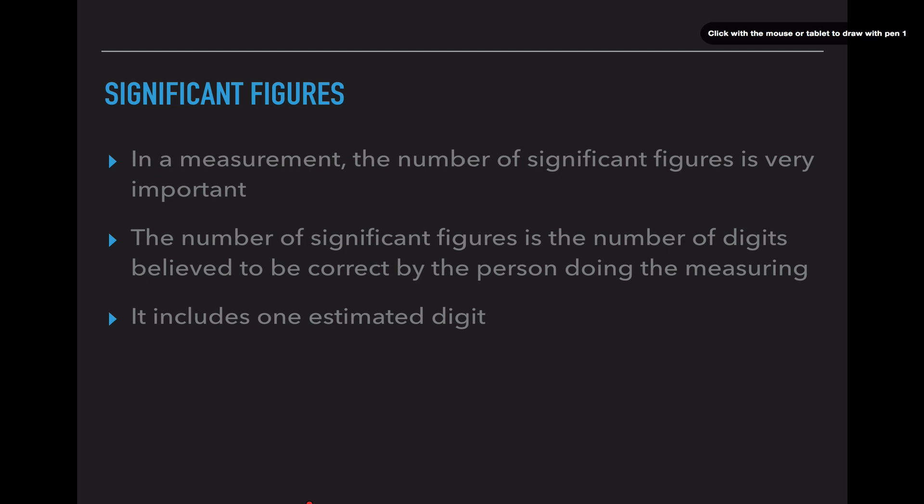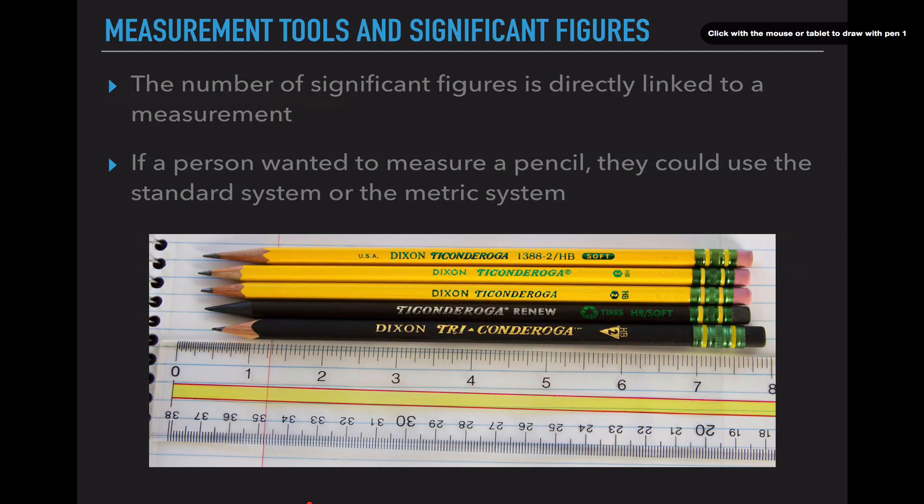In a measurement, the number of significant figures is very important. It is the number of digits believed to be correct by the person doing the measuring. It includes one estimated digit — the first couple of numbers are ones that you are a hundred percent sure about, but the last one you might be guessing based on the location between two of the lines. The number of significant figures is directly linked to the measurement.